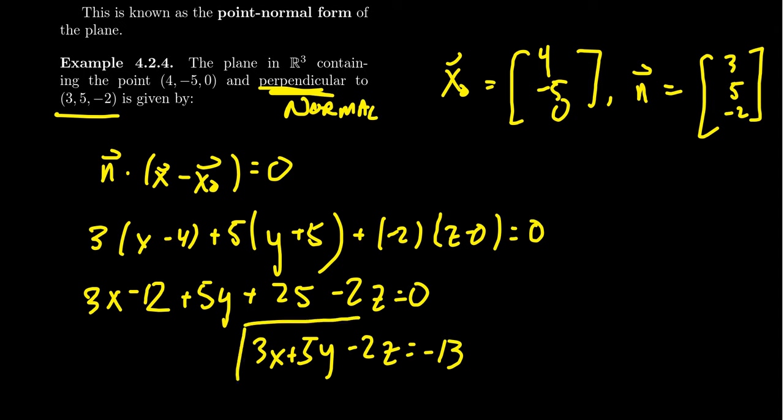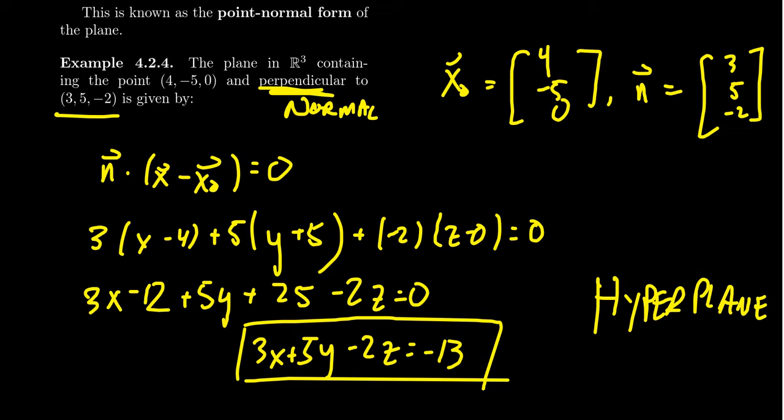This would then give us an equation for that plane in R3. Now this idea here of constructing planes using normal vectors can be generalized to any dimension whatsoever. If we just want to talk about a hyperplane in Fⁿ, then we can describe a hyperplane using a single normal vector and a single point on the hyperplane. We just need a point and we need a normal vector, and that describes the entire hyperplane.